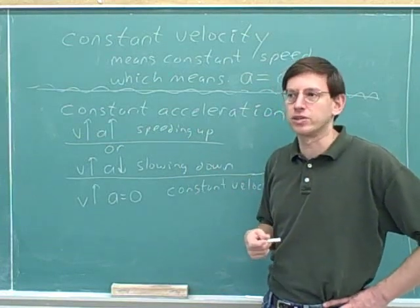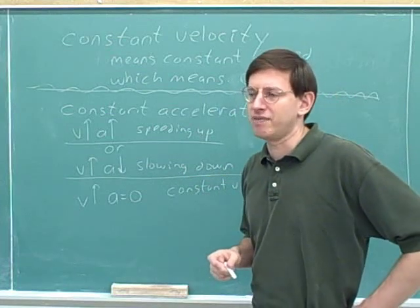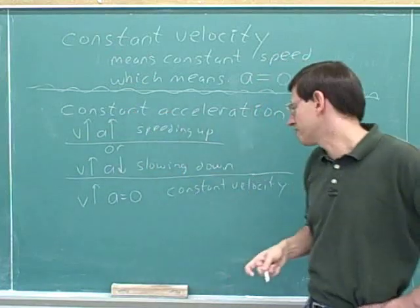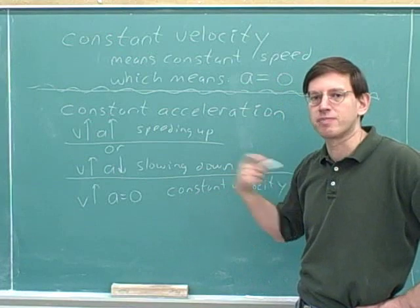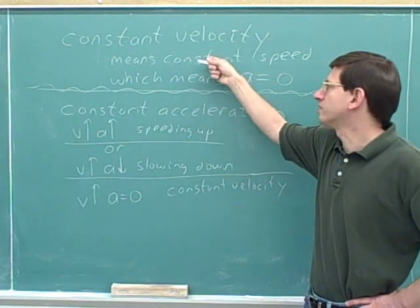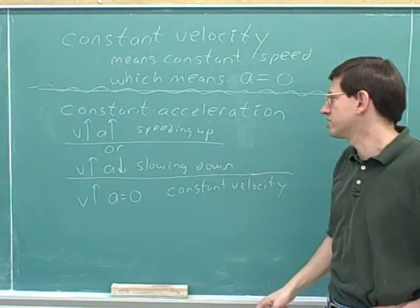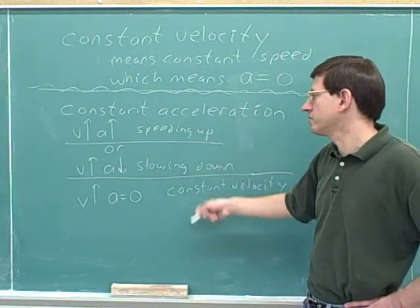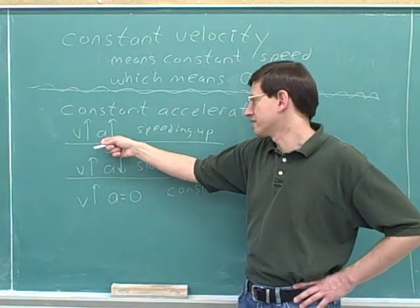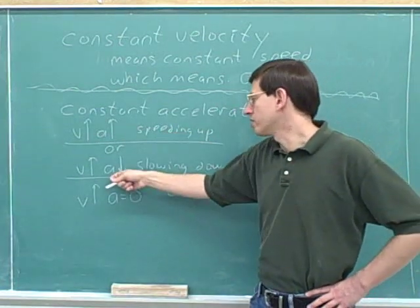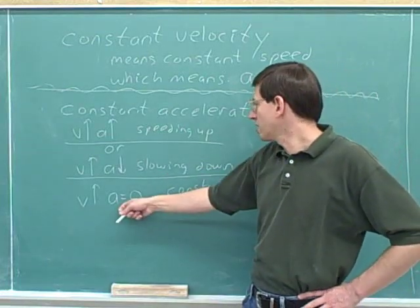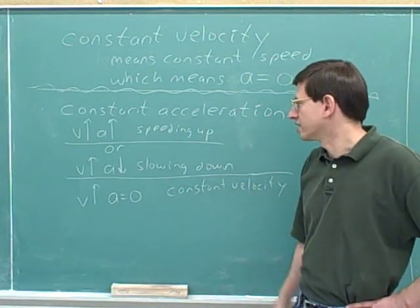You have to think through every single case. The mistake people tend to make is assuming that if they put the word 'constant' in front of one concept, they can put the same word in front of the other concept. If you are moving with constant velocity, you have a constant speed and your acceleration is zero. But if you have a constant acceleration, you could be in three separate cases: your acceleration could be parallel to the velocity and you're speeding up, anti-parallel and you're slowing down, or constant at zero meaning you're moving at constant velocity and constant speed.